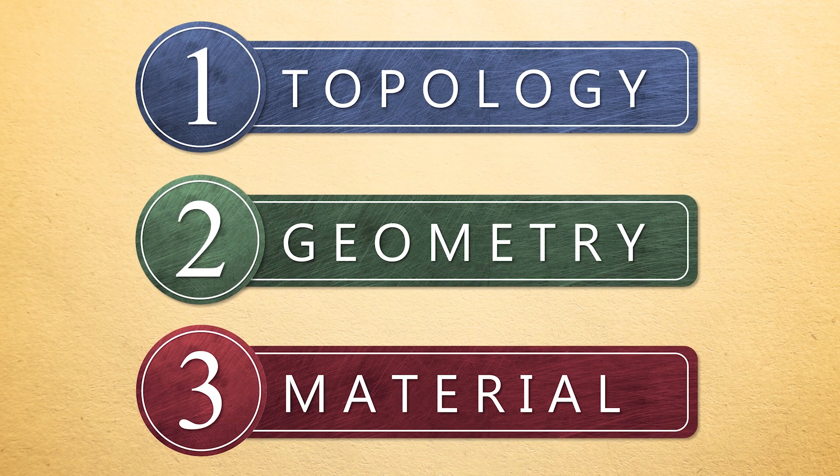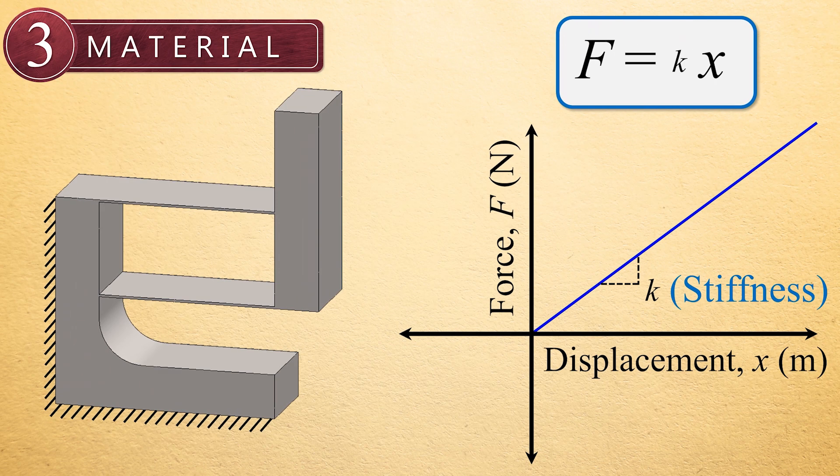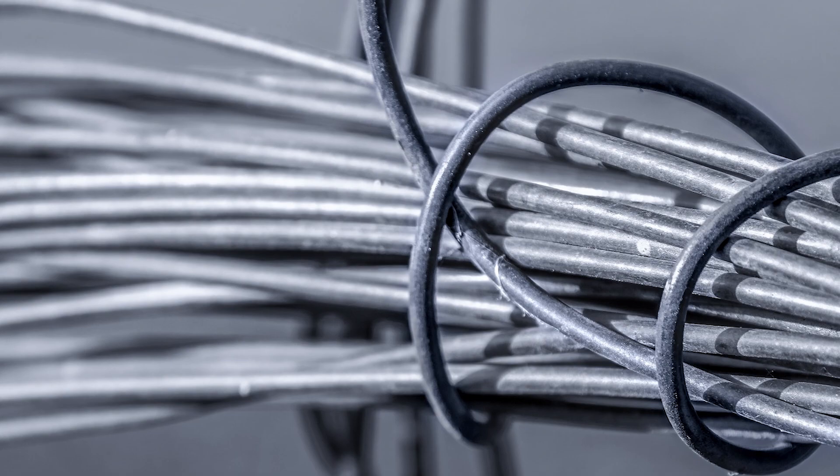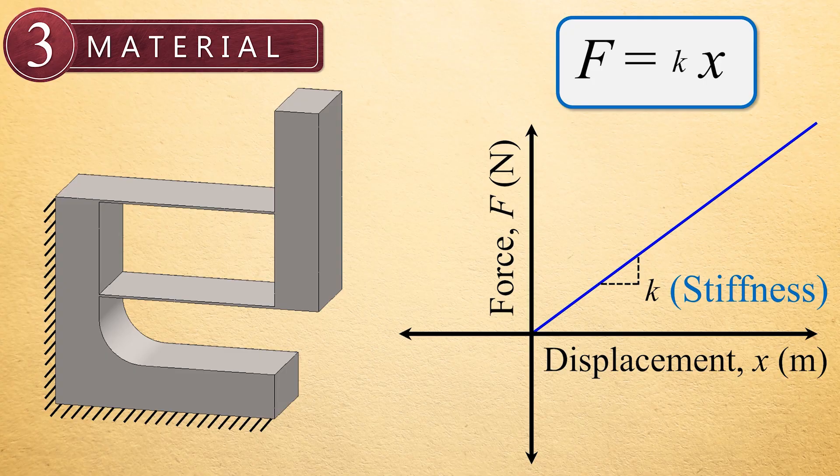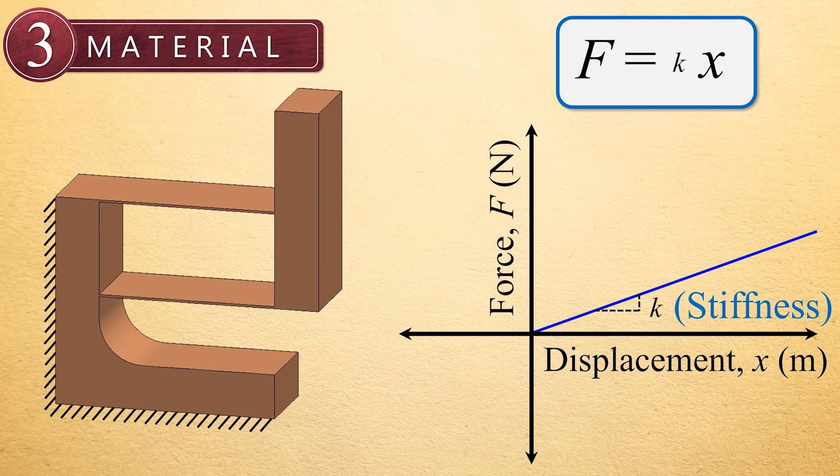The third and final way the stiffness of a spring can be changed is by changing the material from which it's made. If you wanted to decrease the stiffness of our spring example even further by changing its constituent material, you could make the spring out of a more compliant metal like copper instead of making it out of steel, which is almost twice as stiff as copper. Thus, by using copper instead of steel, the slope of the spring's force displacement plot is reduced even more.